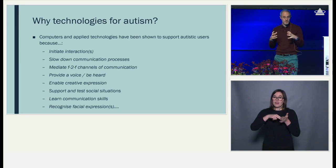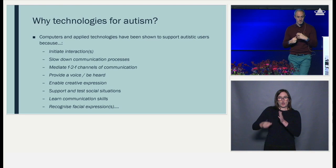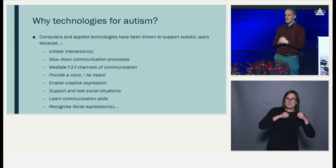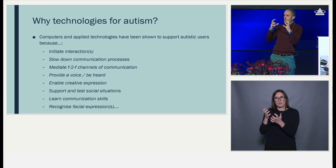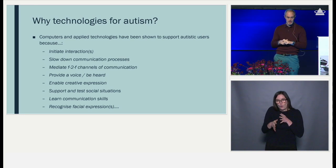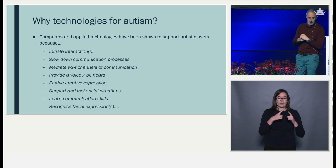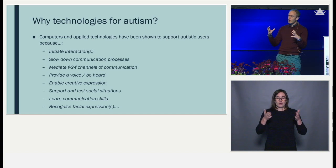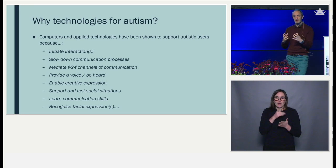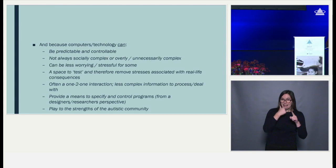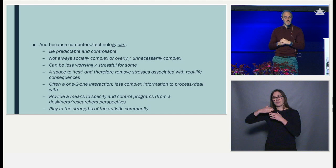Technologies and computers have been shown to support autistic people in a range of ways: to initiate interactions, to slow down communication processes, and to mediate face-to-face channels of communication — so they don't have to talk to another human being but can communicate through technology. In some cases they provide a voice, using things like picture exchange communication systems, and support testing of social situations and learning communication skills and facial recognition.